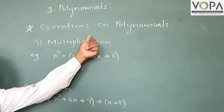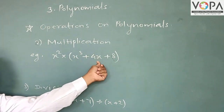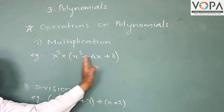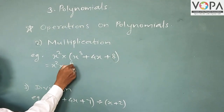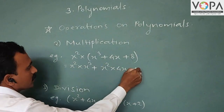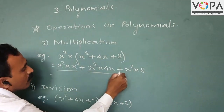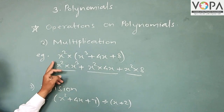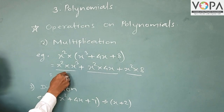Now the operation of multiplication of polynomials: x² multiplied by (x³ + 4x + 8). Now x² multiplies each term of the bracket: x² × x³ + x² × 4x + x² × 8. Now for x² × x³, the base is equal, so do addition of indices: 2 + 3 = 5, then x⁵.